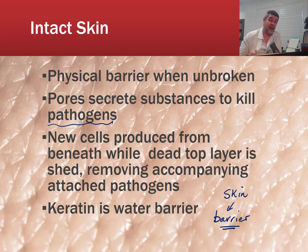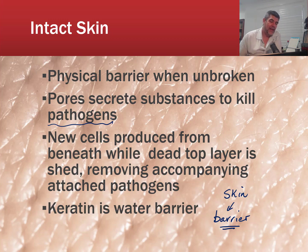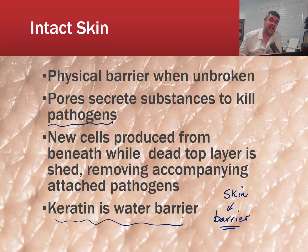New cells are continually produced beneath the skin while the top layer is shed — that constant replenishing of the outer surface also casts off any surface pathogens attached to our skin. Keratin, one of the key components of our skin, is also a water barrier, making us relatively impermeable to water. So it's a pretty effective physical barrier, although as mentioned, there are holes in it.